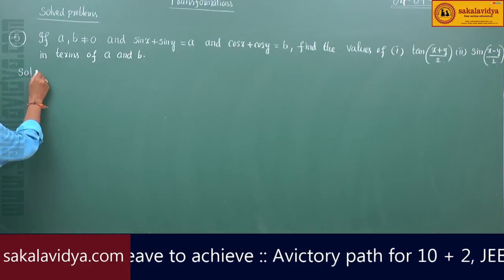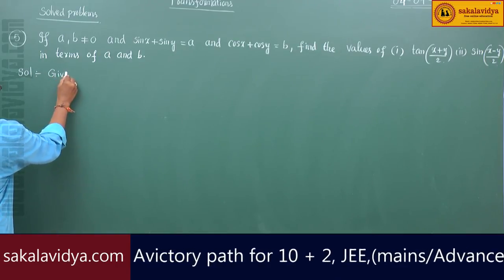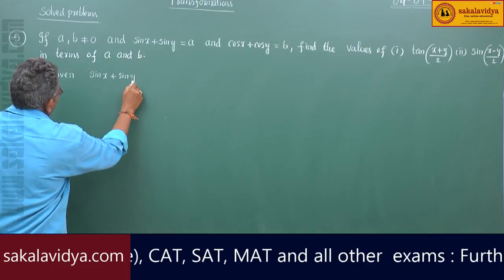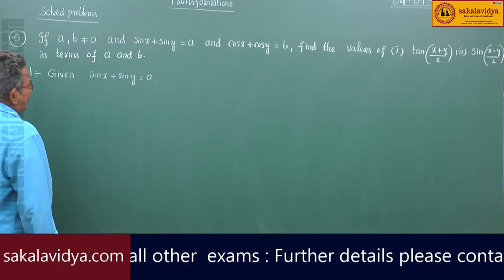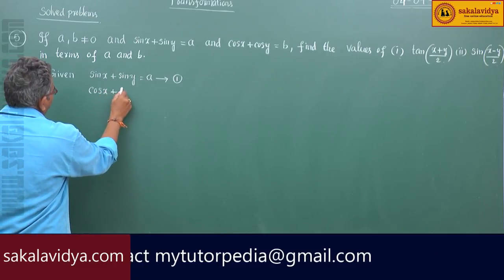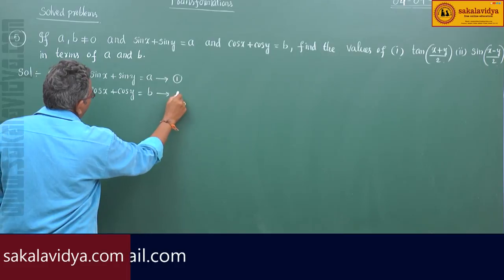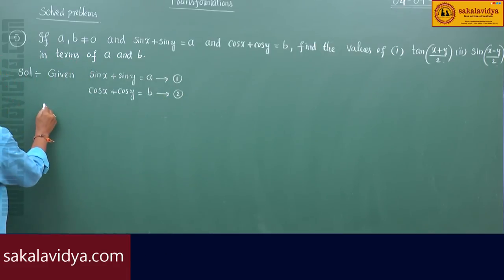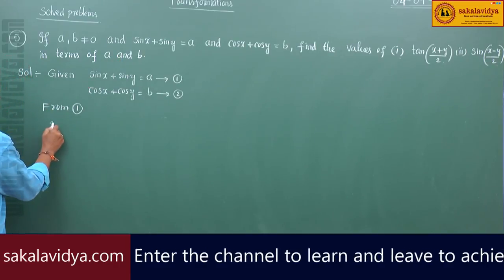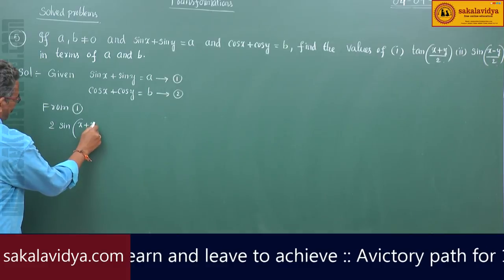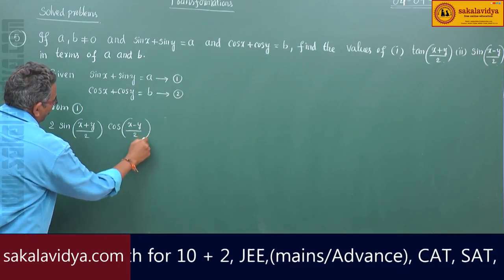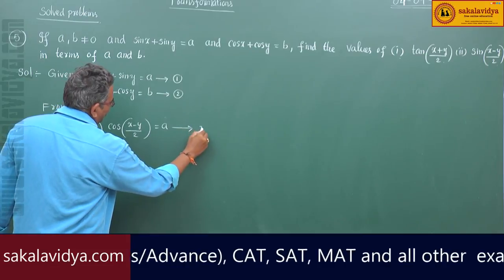Let us start the problem. Given sin x plus sin y is equal to a — say this is equation 1. Now from equation 1 we can apply the sin C plus sin D formula, that is 2 sin of (x+y)/2 times cos of (x-y)/2 equals to a. Say this is equation 3, this is the new form.